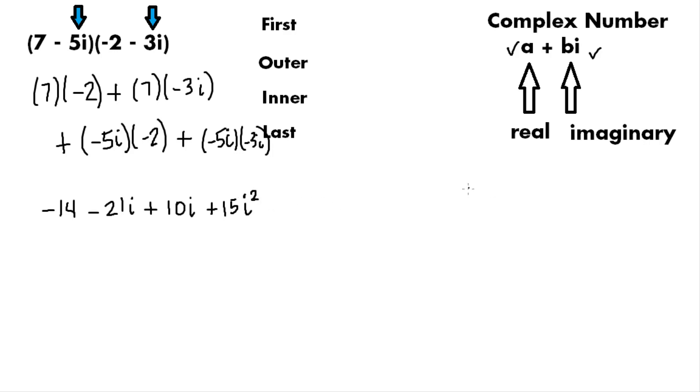So now let's review what i was. i in its basic form is the square root of negative 1. And then by extension we find that i squared equals negative 1. So what needs to happen in this last step is this i squared needs to be written as plus 15. And I'm going to change the i squared to negative 1. And what that effectively does is it changes that last coefficient from a positive 15 to a negative 15.